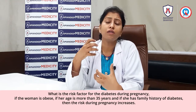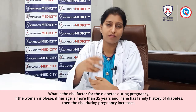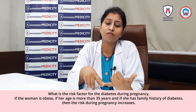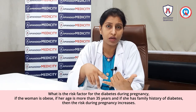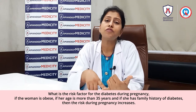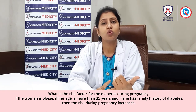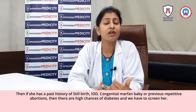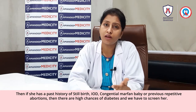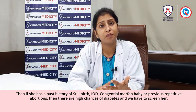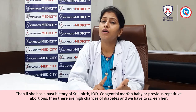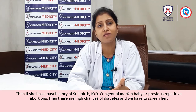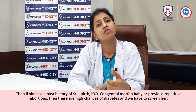What are the risk factors for diabetes during pregnancy? If the lady is obese, if her age is more than 35 years, or if she has a family history of diabetes, the risk during pregnancy increases. Also, if she has a past history of stillbirth, IUD, any congenital malformation baby, or previous abortions — in such cases there is a high chance of diabetes and we have to screen for her.